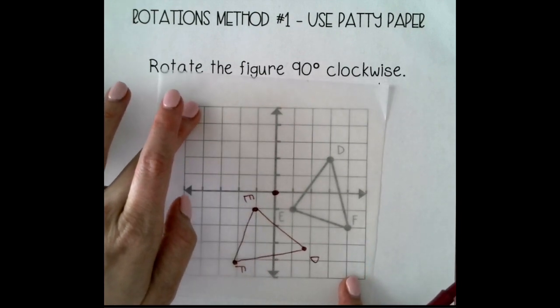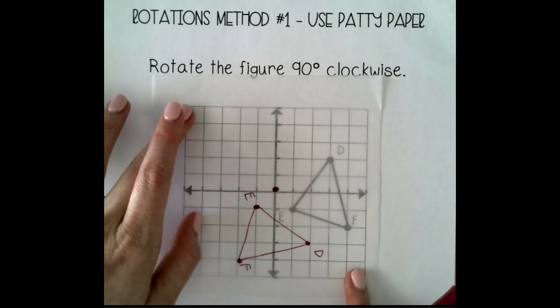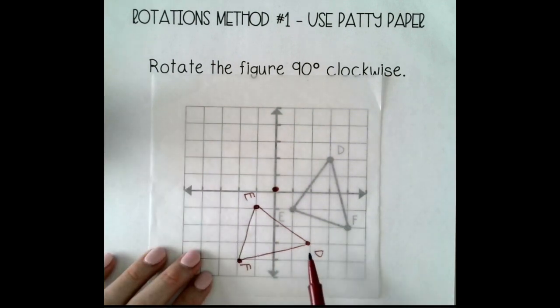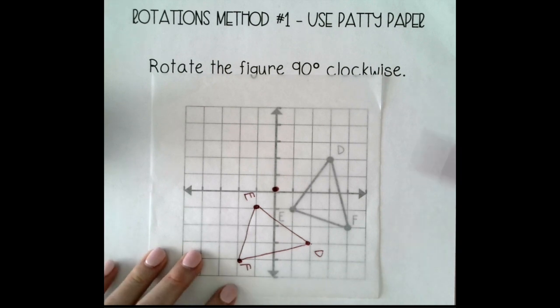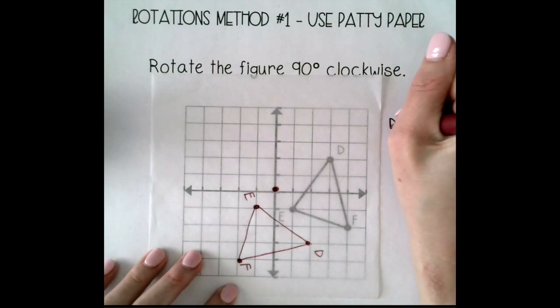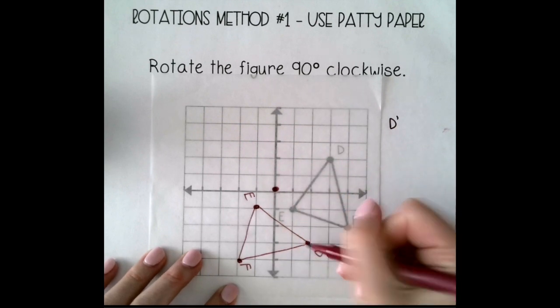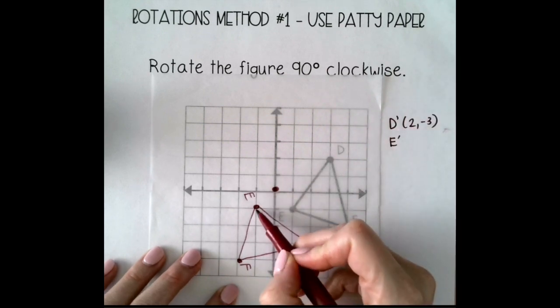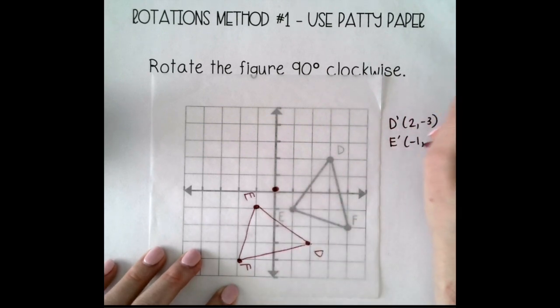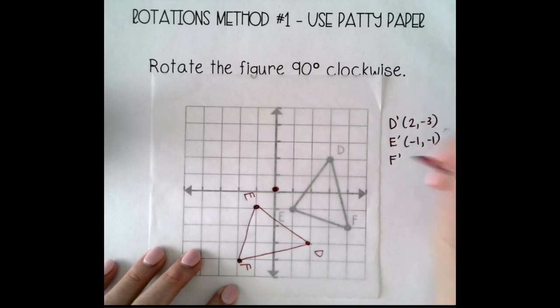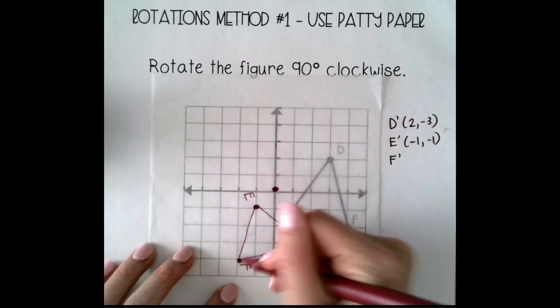So once you get done rotating, you want to make sure that your origin lines up again, and you can see now where your image points should be. So I'm just going to come over here and write down where my new points are. So D prime is now here at positive 2, negative 3. E prime is at negative 1, negative 1. F prime is at negative 2, negative 4.